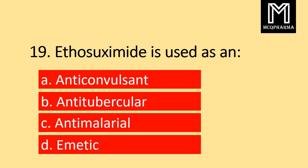Question number 19. Ethosuximide is used as: Option A anti-convulsant, Option B anti-tubercular, Option C anti-malarial, Option D emetic. Correct answer: Option A anti-convulsant.